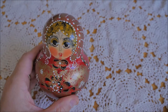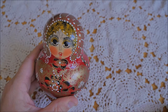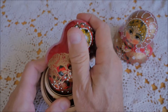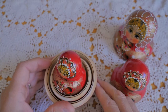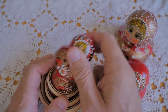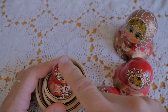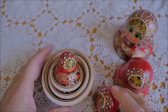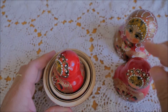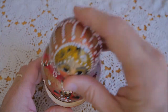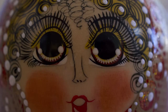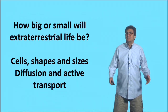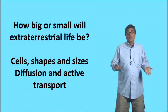Life on Earth has evolved primary endosymbiosis, secondary endosymbiosis, and in the dinoflagellates even tertiary endosymbiosis — life within life within life. In the universe, how many levels of nesting can there be? So how big or small will extraterrestrial life be? That's something we want to try to answer.